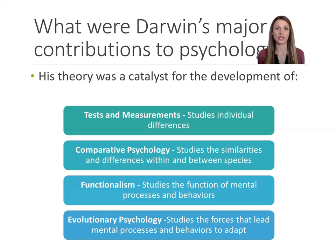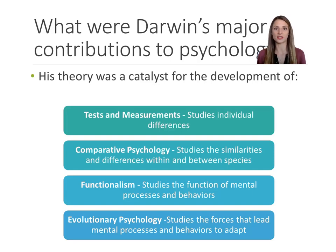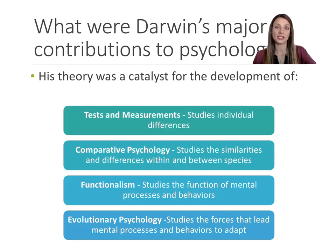Darwin's theory of natural selection had a huge impact on the field of psychology. It influenced tests and measurements, the study of individual differences. It influenced comparative psychology, which looked at the similarities and differences both within a species of animal and across species of animals — for example, comparing rats with mice. Functionalism, which we'll talk about in a few weeks, was also heavily influenced by Darwin's ideas. The functionalists studied the functions of the mind and behaviors: why do we think the way we do, why do we behave the way we do, and are these thoughts and behaviors somehow adaptive? His ideas also influenced evolutionary psychology, which focuses on the forces that lead us to adapt and change our thoughts and behaviors.